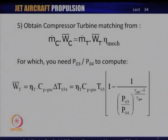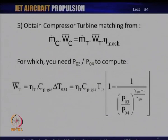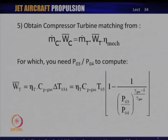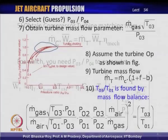At that particular operating point of the compressor and at the operating point of the turbine — defined by P03/P04 and the speed line N/sqrt(T03) — we get the operating point of the turbine. So we now have an operating point on the compressor map and an operating point on the turbine map which are said to be matched to each other.